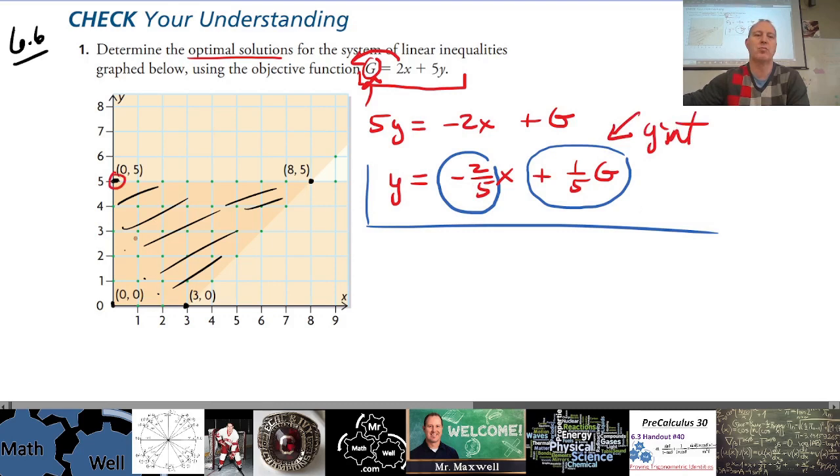If it just says optimal, you're looking for the max and min. So the largest y-intercept, when you sketch this line through these points, the largest y-intercept will give you the points that yield a maximum value for the objective function. Real quickly on your page, you want to find, sketch a line that has a slope of negative 2/5.